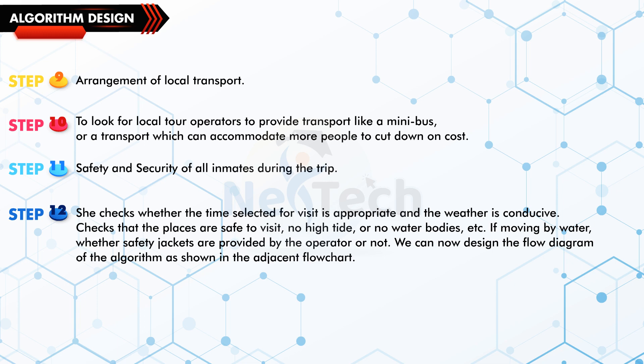Step 10: To look for local tour operators to provide transport like a mini bus or a transport which can accommodate more people to cut down on cost. Step 11: Safety and security of all inmates during the trip. Step 12: She checks whether the time selected for visit is appropriate and the weather is conducive. Checks that the places are safe to visit—no high tide, or no water bodies, etc. If moving by water, whether safety jackets are provided by the operator or not. We can now design the flow diagram of the algorithm as shown in the adjacent flow chart.